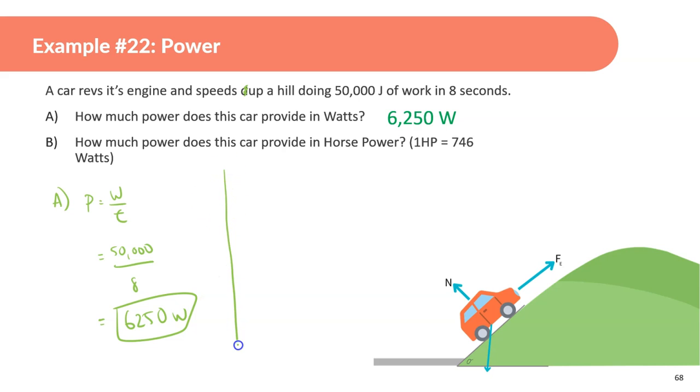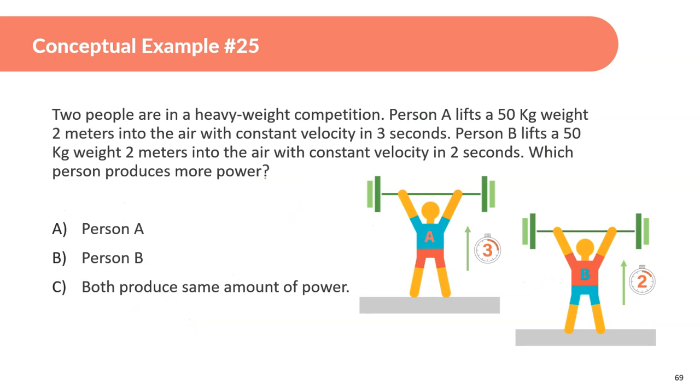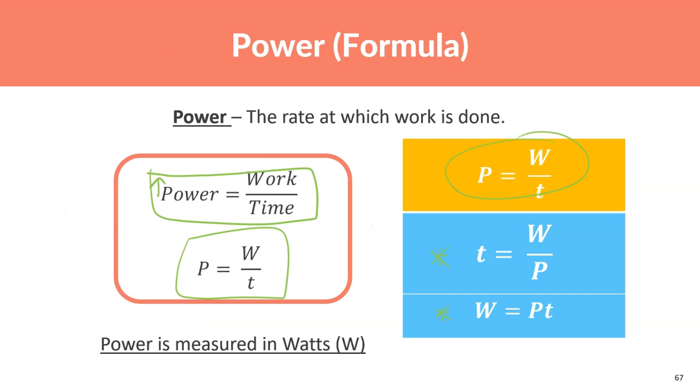Part B is, how much power does this car provide in horsepower? So, 6,250 watts, 1 horsepower equals 746. So, 6,250 divided by 746, and we get 8.38 horsepower. Relatively basic.